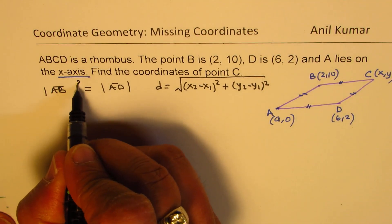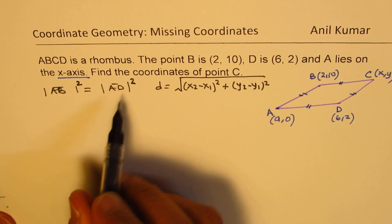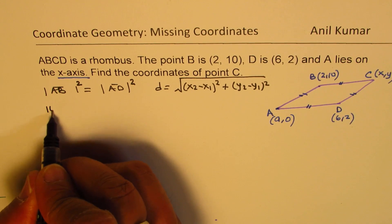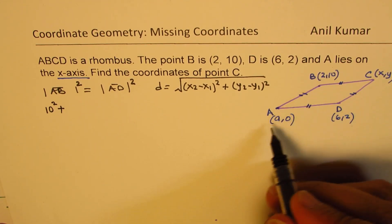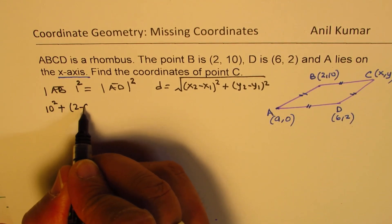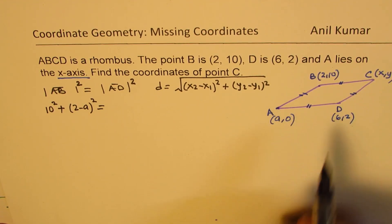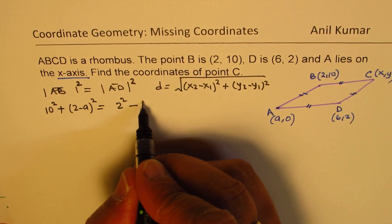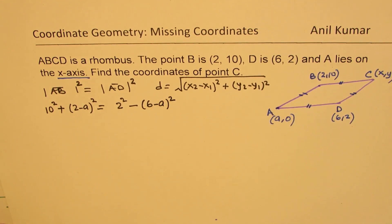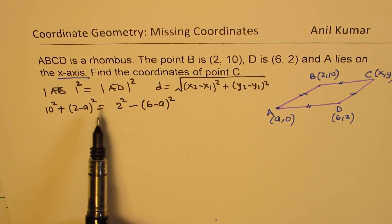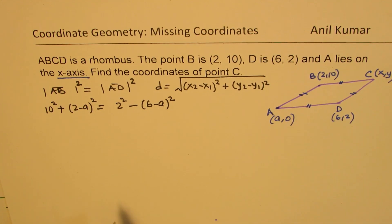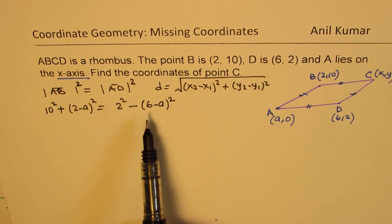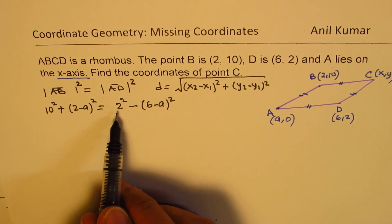So we'll say that the length squares are also equal. A to B length will be (10-0)², which is 10² plus (2-A)², equal to A to D, which is (2-0)², which is 2² plus (6-A)². So we get this, equating these two lengths squared.